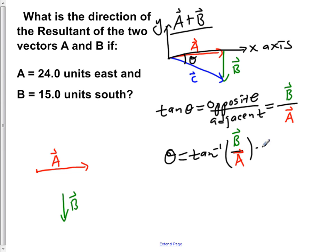If we now plug in the values for B and A, so that would be 15 units over 24 units and take the tan inverse of that, we would find that theta is 32 degrees.